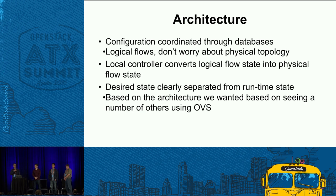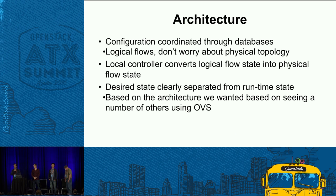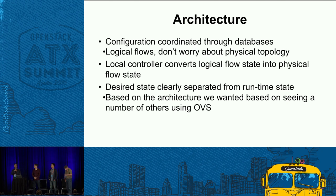We use central databases to coordinate and configure the whole system — currently using OVSDB. It's possible that if we run into scale limitations we'll switch to a different database, since the particular database isn't essential to the system. Most of the work happens at the hypervisors — it's a distributed controller, not primarily a centralized one. This architecture came from lessons learned from multiple generations of controllers at Nisera and VMware.